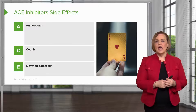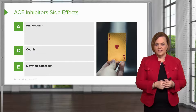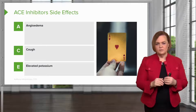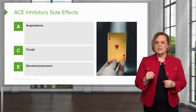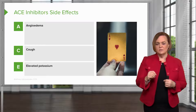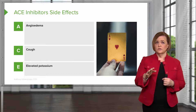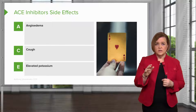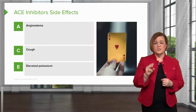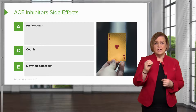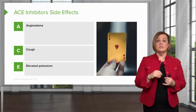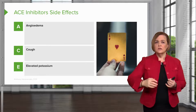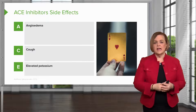A is for angioedema. C is for cough. And E is for elevated potassium. When thinking about the side effects for ACE inhibitors, I know their mechanism of action — they suppress, they inhibit ACE — so I end up with less angiotensin 2. And I know that their side effects fall into A-C-E: angioedema, which is a swelling of the mucous membranes; cough; and elevated potassium.